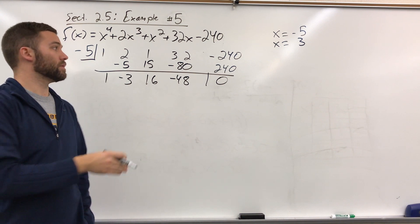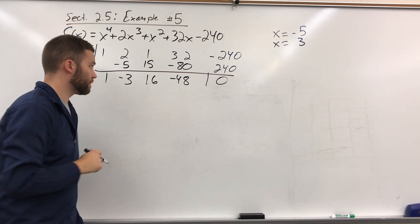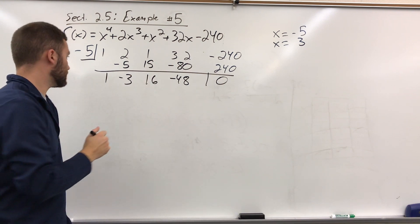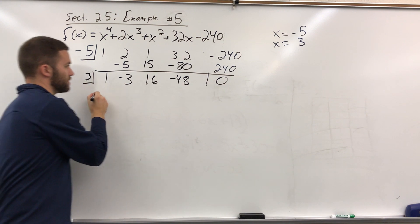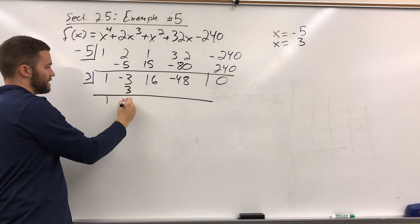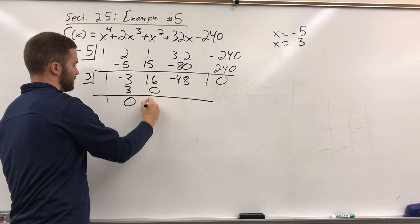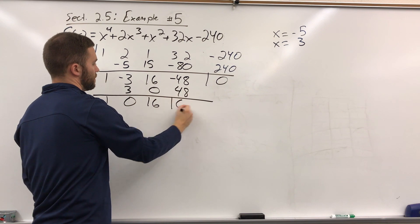If you didn't, you did something wrong, because a zero, when you do the synthetic division, should result in a remainder of 0. Now we're going to do 3 next, so we'll write 3 in the little box and do some synthetic division again. Bring down the 1, 3 times 3 is 3, add them up, that's 0, 3 times 0 is 0, add them up, that's 16, 3 times 16 is 48, add them up, that's 0.